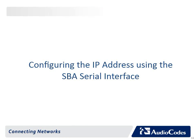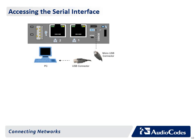Configuring the IP address using the SBA serial interface. The SBA can also be accessed by establishing a serial communication with the OSN using a terminal emulation program such as HyperTerminal, TeraTerm, or others. Connect the LAN port of the OSN server to a PC. Connect the PC to the Mediant 1000B serial port on the OSN 3B or OSN 4 using the supplied micro USB to USB cable adapter. Connect the micro USB connector end to the Mediant 1000B OSN serial port and then connect the other end of the cable to the serial interface port on your PC.